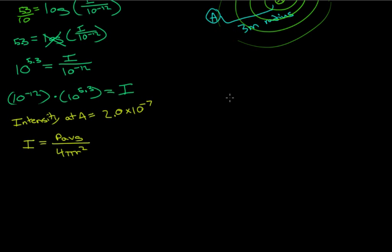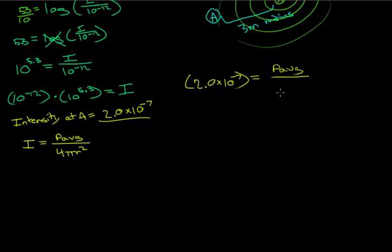Going back to the formula that describes intensity, we know that intensity equals the average power over 4 pi r squared. Because we're at point A, 3 meters away, the intensity is 2.0 times 10 to the negative 7. So we write: 2.0 times 10 to the negative 7 equals P-average over 4 pi r squared, and our radius was 3 meters, so we're doing 4 pi times 9. Bringing this over, we can find our P-average, which is constant.